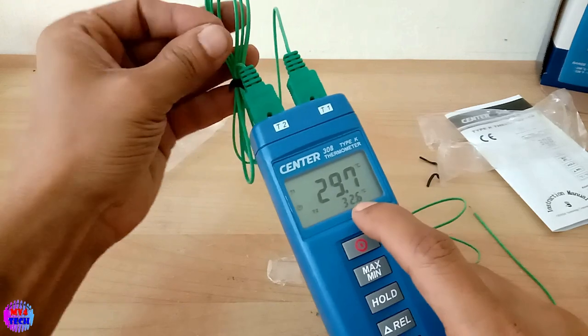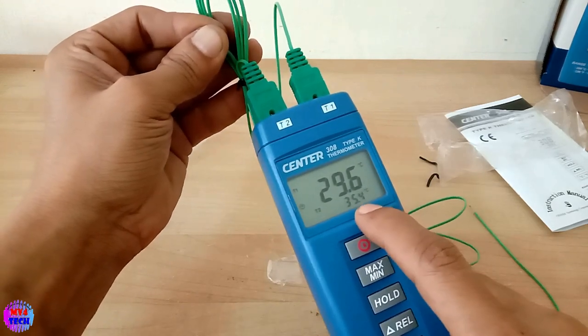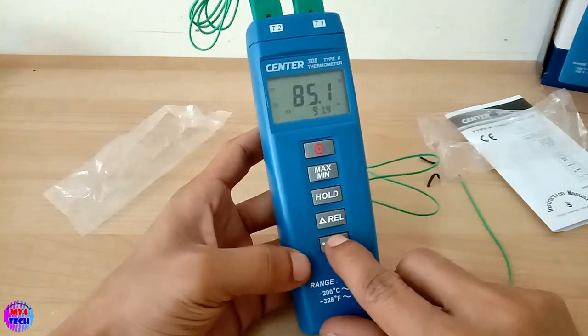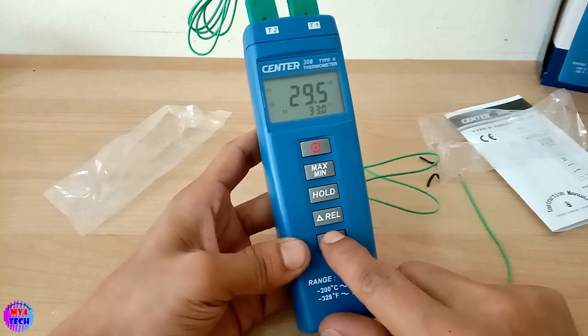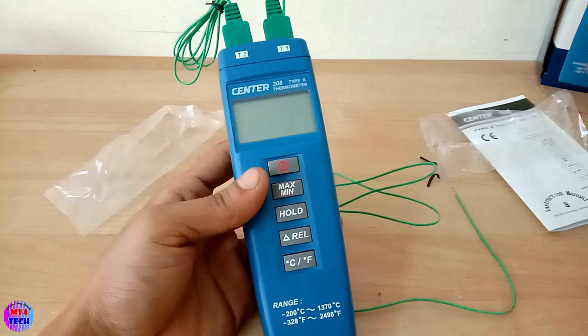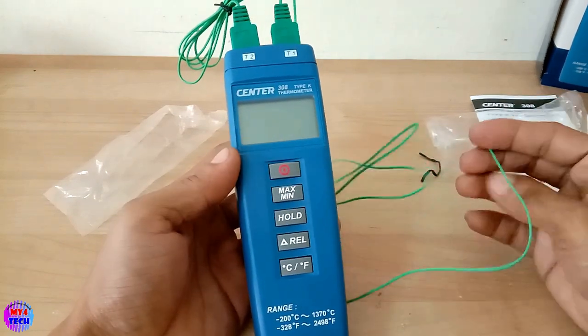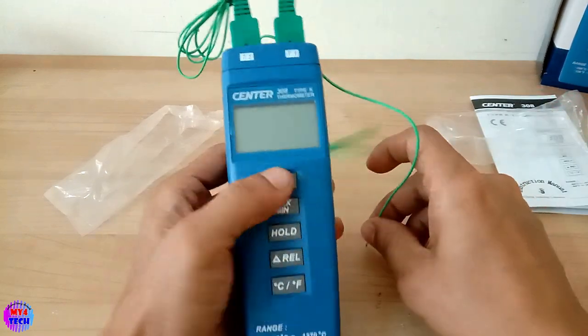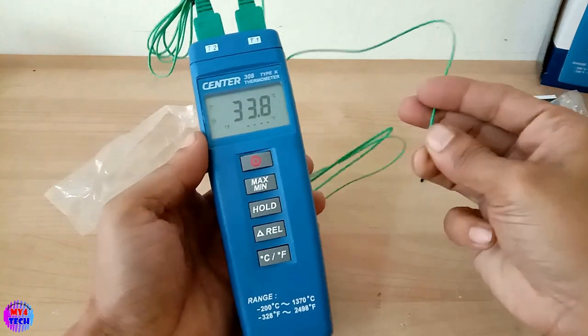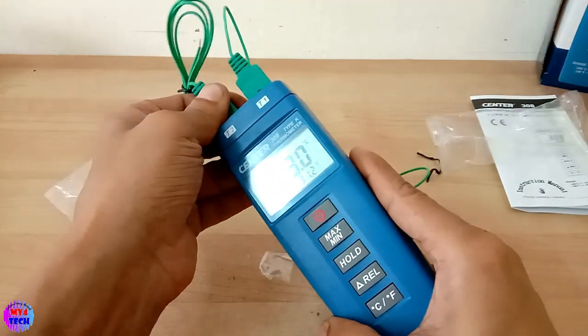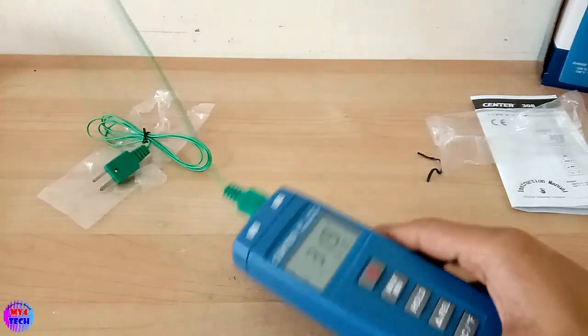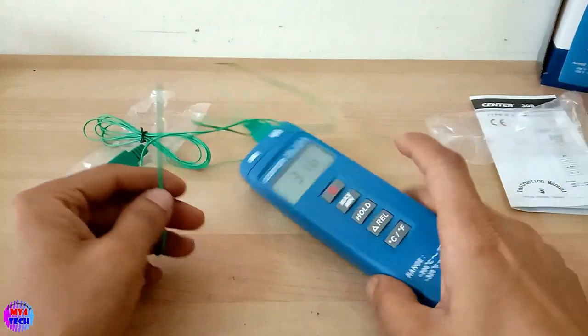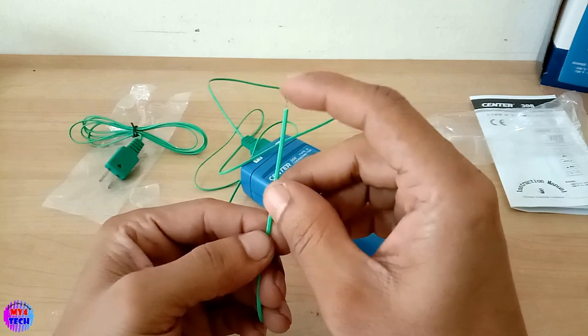This is the Center Mini Thermometer. You can use it with the probe to check temperatures. It's a great way to check different surfaces and materials.